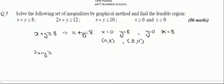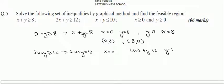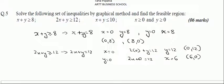For 2x plus y greater than or equal to 12, we draw the straight line as well. If x equals 0, the equation becomes 2 times 0 plus y equals 12, so y equals 12, giving point (0,12). If y equals 0, then 2x equals 12, so x equals 6, giving point (6,0).